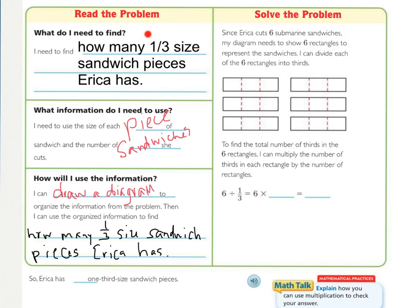We're now going to take all of this information that we've thought about and actually put that into use now and solve our problem. Since Erika cuts six submarine sandwiches, our diagram needs to show six rectangles to represent the sandwiches. So there is six rectangles right there. And then I can divide each of the six rectangles into thirds. That's what these red dotted lines are. There's one, two, three pieces in each of those rectangles that represent the sandwiches.